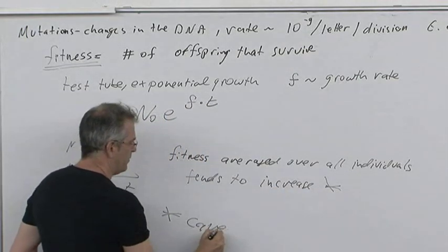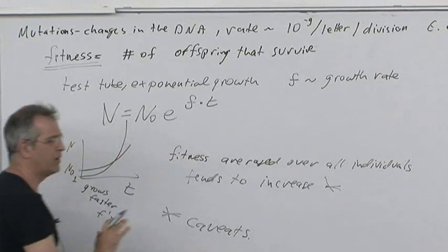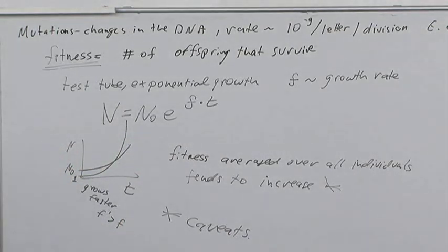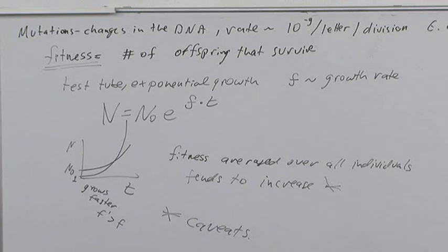Because if you're making more babies, your DNA gets more represented in the next generation, and those babies will have more babies. Then a new mutant arises that makes more babies per unit time, and it takes over. Fitness tends to increase — this is the process of natural selection.